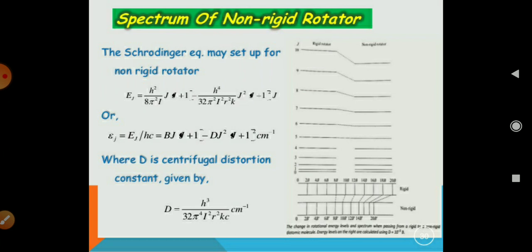You can see after the fifth level, the energy level started decreasing for the non-rigid rotor because after rotation, the molecule feels much spread and it becomes non-rigid.